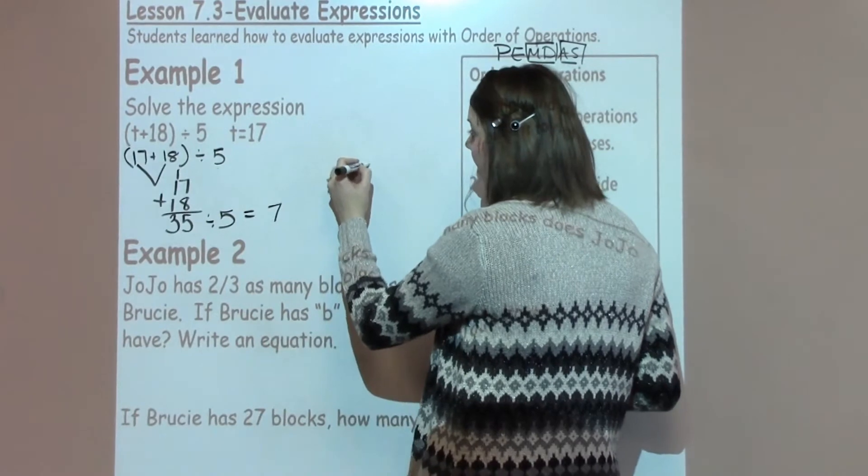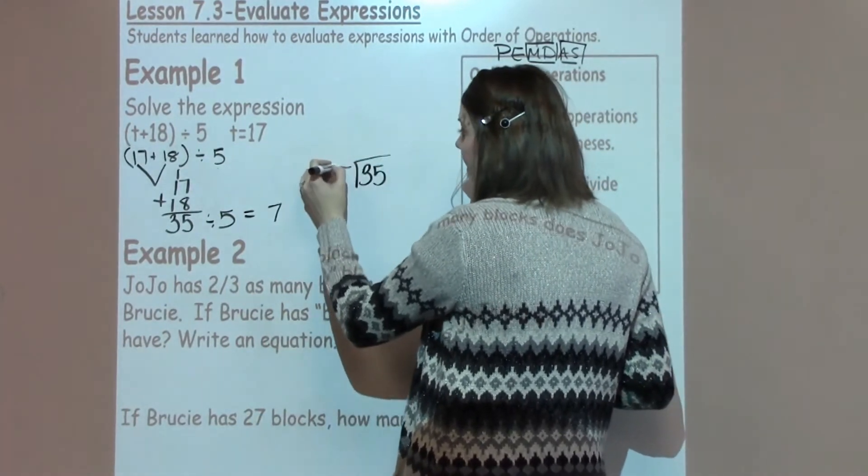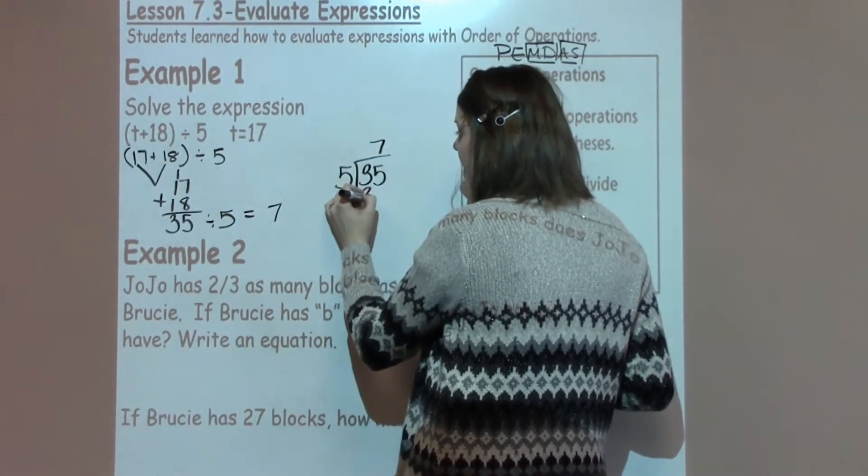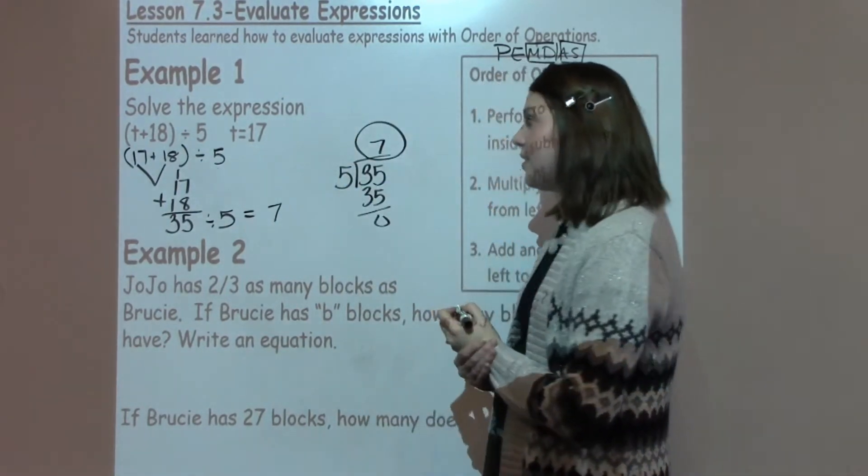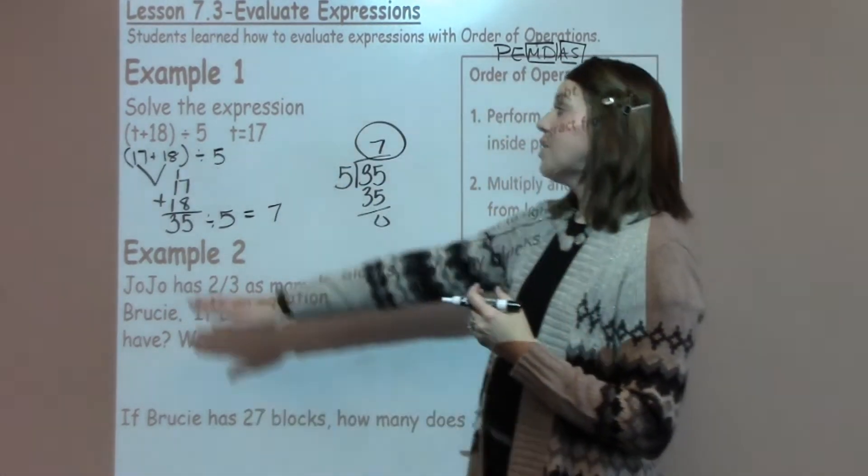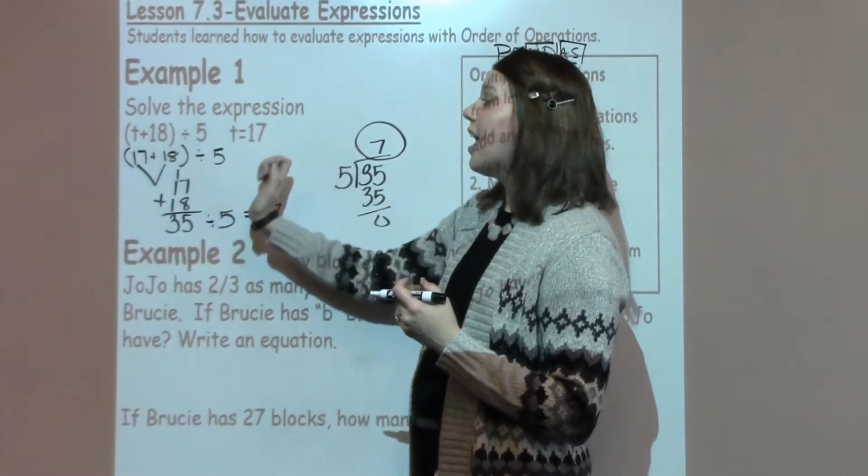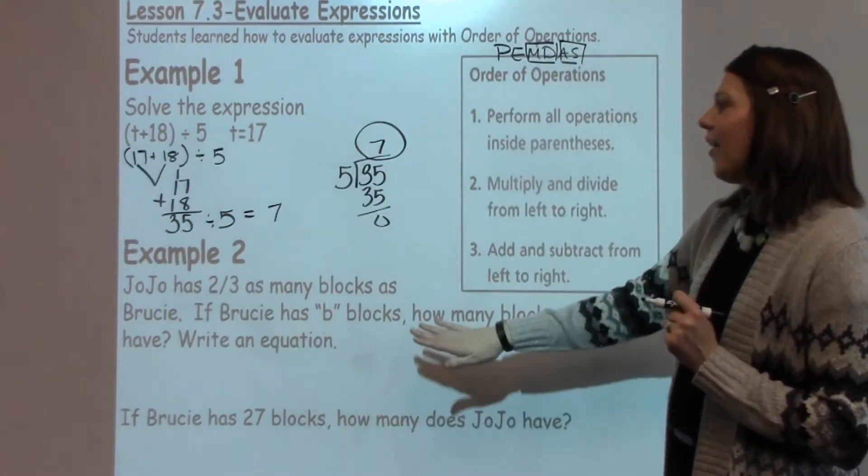Or some students may need to go ahead and write it out. 35 divided by 5, which would then give me 7. So our answer is 7 in this case. Just remembering to go ahead and always work with your parentheses first, and then go what's out of the parentheses next.